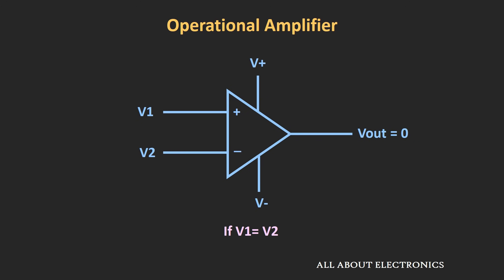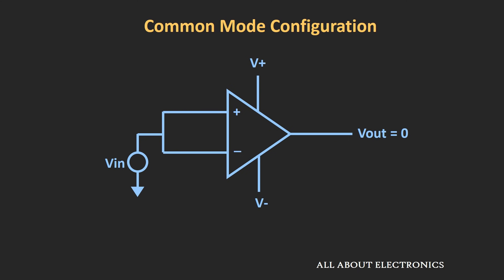Now suppose if two input voltages V1 and V2 are equal, in that case the output of the op-amp should be equal to 0. In other words, if two input terminals are tied together to the common input voltage, the output of the op-amp should be equal to 0. This configuration where two input voltages are equal or tied together to the common input voltage is known as the common mode configuration.